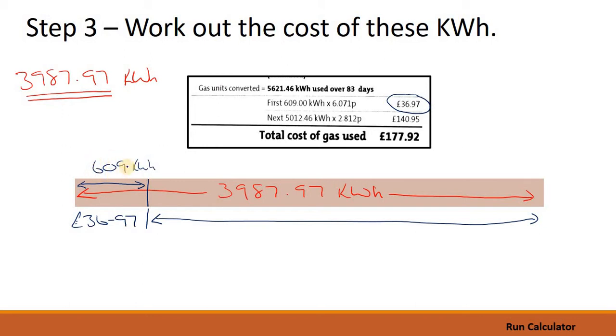If we started off with 3,987 and we know about the first 609 we've only got the rest to work out. So all we do is we subtract 609 from this number to work out how many kilowatt hours we still have to pay for. So 3,987.97 take away 609 equals something.